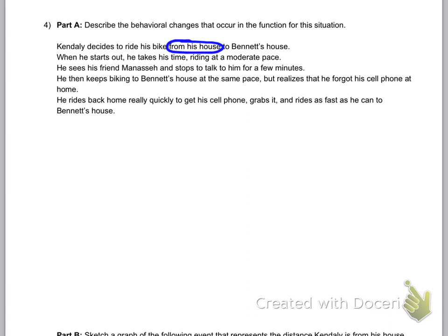All the way till the very top would be at Bennett's house. So Kindly decides to ride his bike from his house. That means the starting point is going to be at zero.